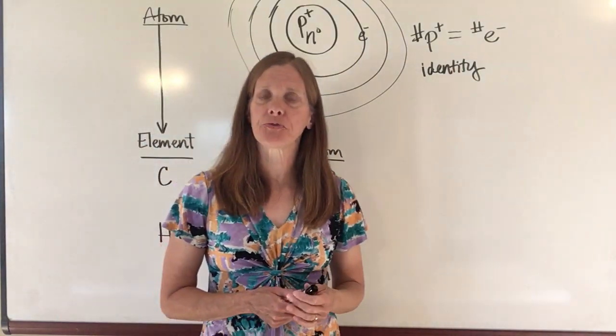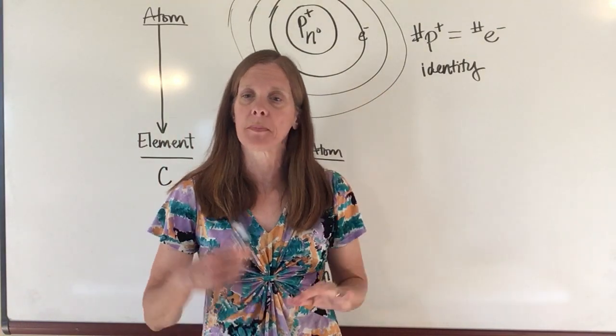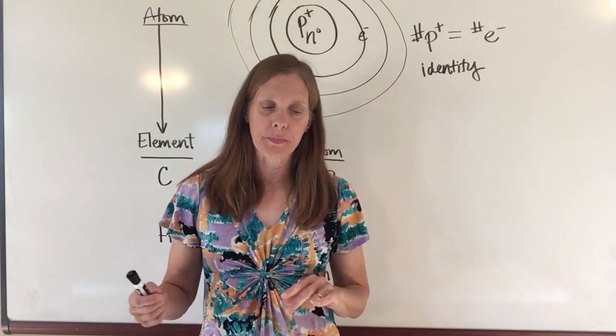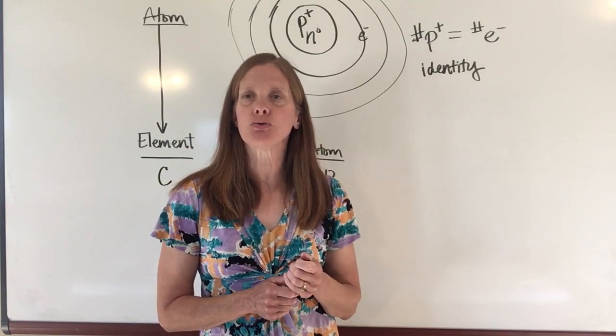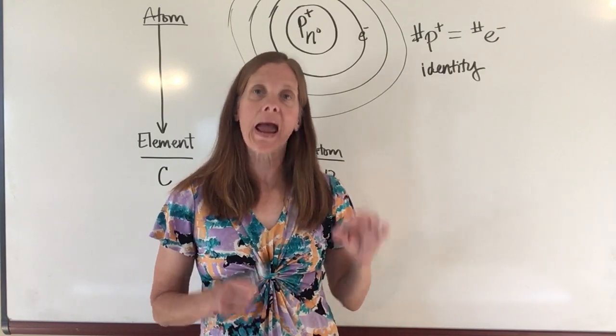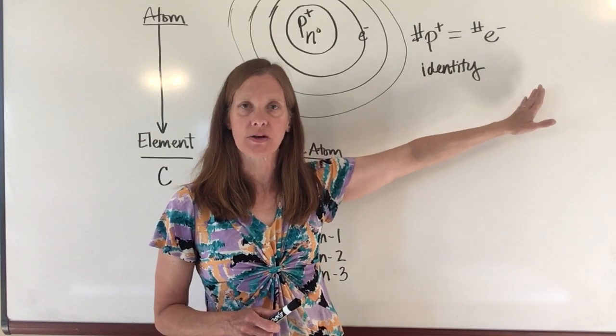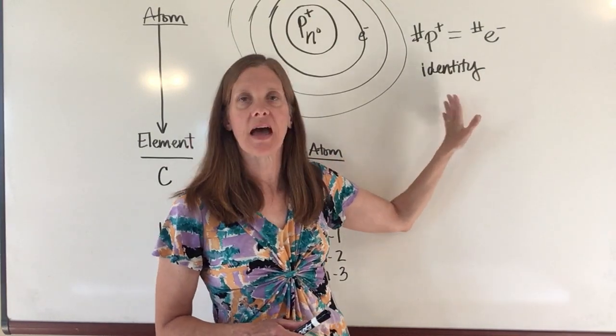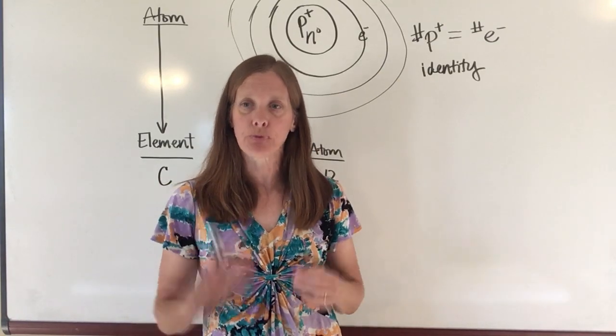You may remember from physical science that we can gain or lose electrons. We'll talk about that a little bit later. You can gain and lose electrons, but then you no longer have an atom—then you have what's called an ion instead. So for an atom, remember that the number of protons is going to be equal to the number of electrons, and that's what determines the atom's identity and all of the atom's properties.